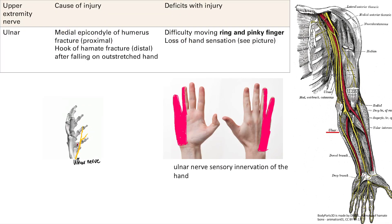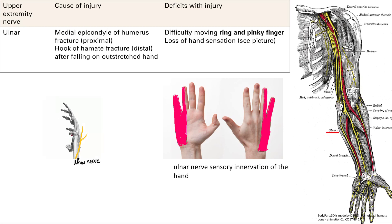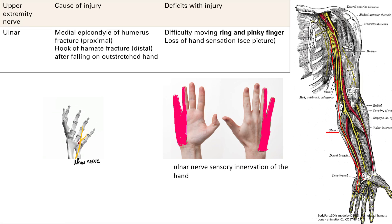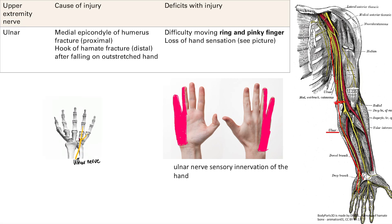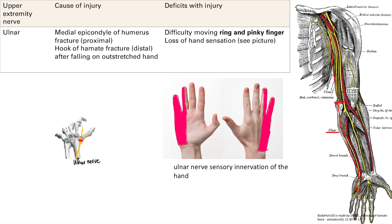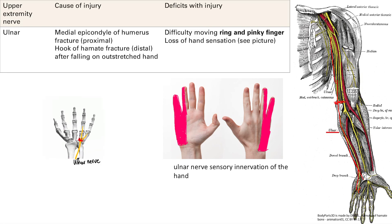Next is the ulnar nerve, which I view as the complement to the median nerve. The ulnar nerve runs along the medial side of the arm. You can get a medial epicondyle fracture that damages it, or a hook of hamate fracture can also cause injury to the ulnar nerve.